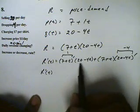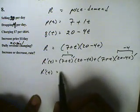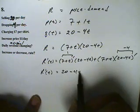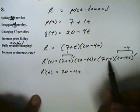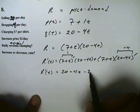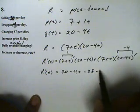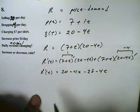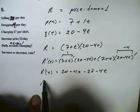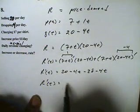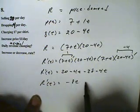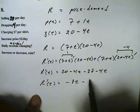When I multiply by 1 times the 20 minus 4t, we're gonna get 20 minus 4t. When I multiply by negative 4 times the 7 plus t, I'm gonna get negative 28 minus 4t. Now collect everything together and we end up getting negative 8t and negative 8.